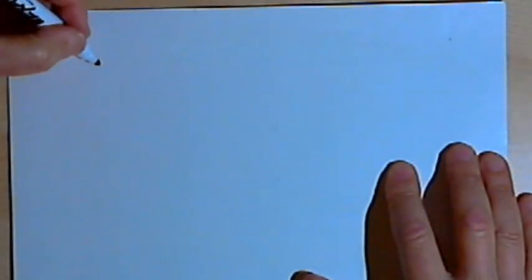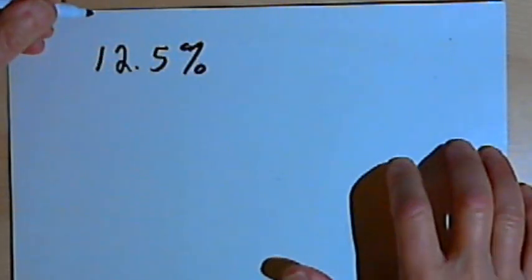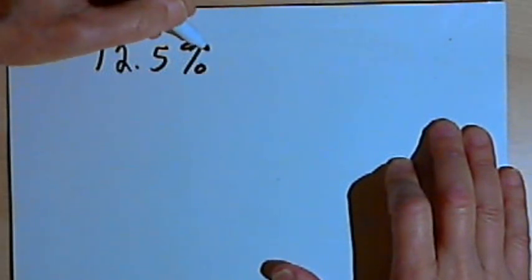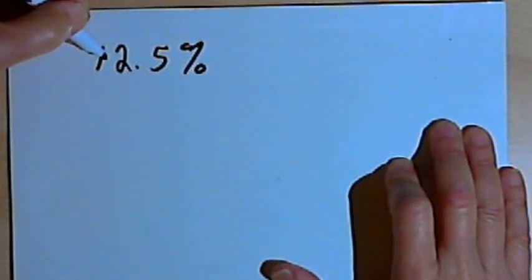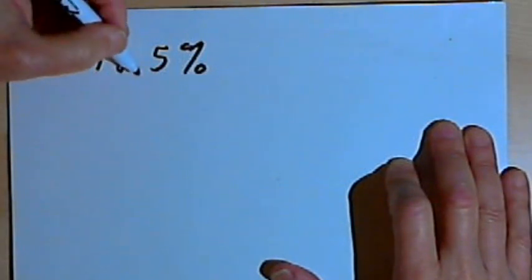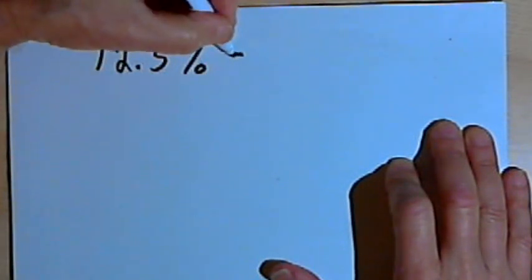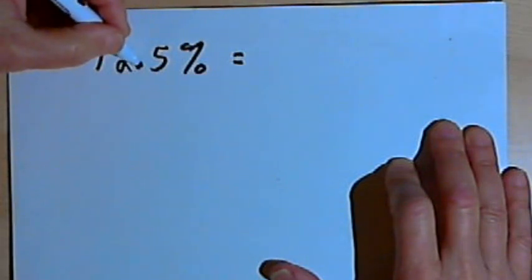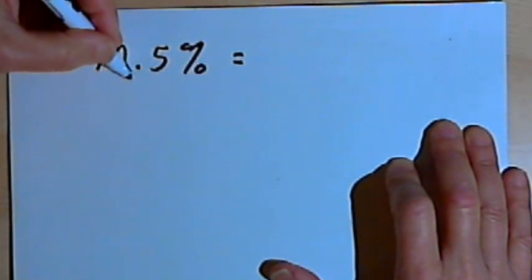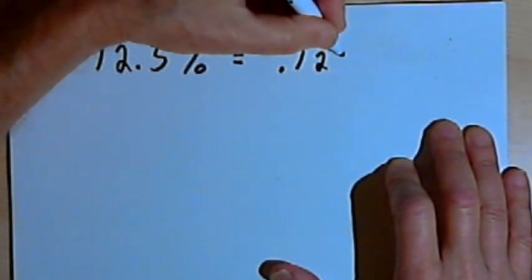So let's start out with something like 12.5 percent. I want to convert that into both a decimal and then also into a fraction. The rule for turning percents into decimals is we take the number, move its decimal point two places to the left, and get rid of the percent sign. So if I have 12.5 and I move its decimal point two places to the left, I'll get 0.125.